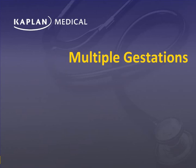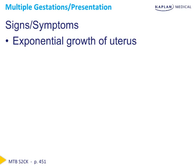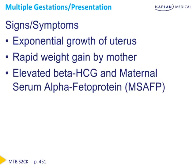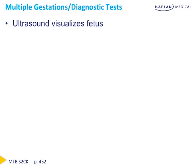We are going to move on now and talk about multiple gestations. Multiple gestations are becoming increasingly more common and can be an easily tested topic on the Step 2 exam. Some signs and symptoms include exponential growth of the uterus, rapid weight gain by the mother, and elevated beta-hCG and maternal serum alpha-fetoprotein. Due to the use of fertility drugs, the multiple gestation rate is on the rise and is currently about 3%. Ultimately, multiple gestations are diagnosed via ultrasound.